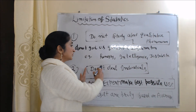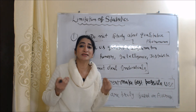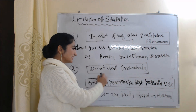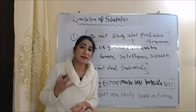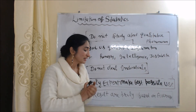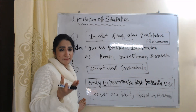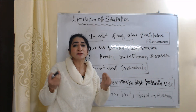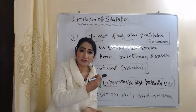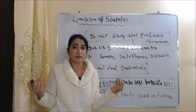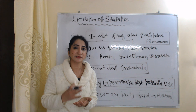The second limitation is that statistics do not deal with individuals — statistics only tell us about groups, not about one individual. The next limitation is that only experts can make the best possible use of statistics, as the methods are very complex and complicated. The next limitation is that results are based on averages, and averages are not always true. For example, if the average salary of a teacher is 50,000 per month, it is not necessary that every teacher earns exactly 50,000 — it can be more or less — but in statistics, we consider it true.